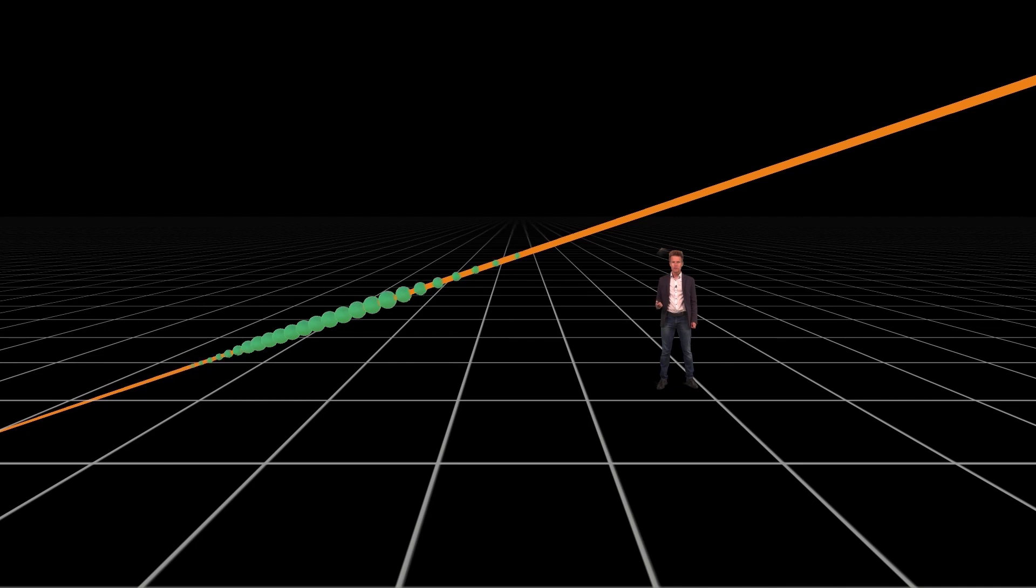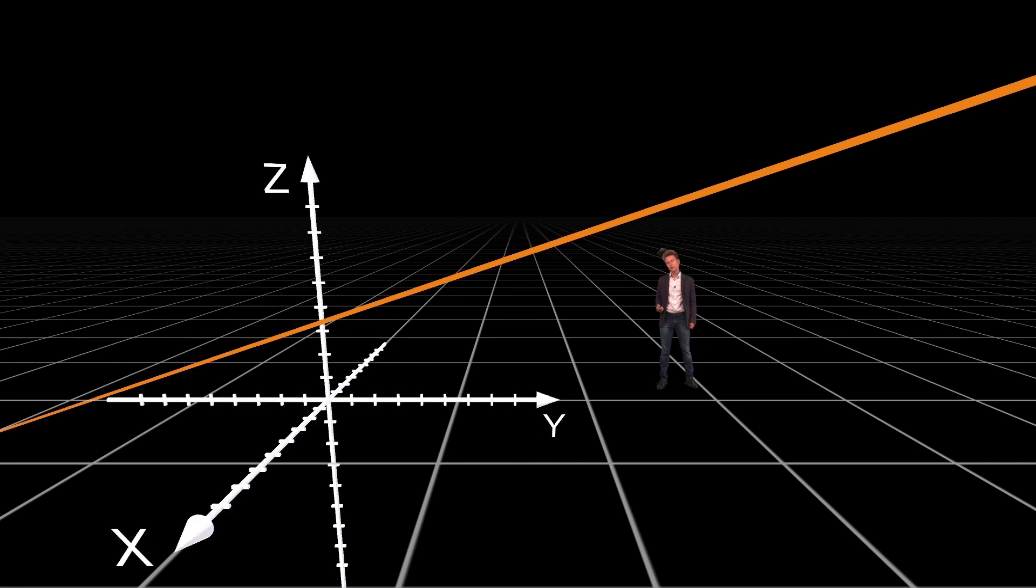A straight line consists of infinitely many points and we want to capture all of them with our equation. To determine the location of a point in space a coordinate system is used. Since we are working with three dimensions here we need a three dimensional coordinate system.